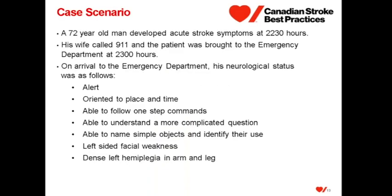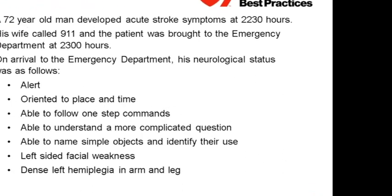We have a 72-year-old man who was brought to the emergency department with acute onset of stroke symptoms. His assessment found him to be alert, oriented to place and time, able to follow one-step commands, able to understand a more complicated question, able to name simple objects and identify their use, left-sided facial weakness, and dense left-sided hemiplegia in his arm and leg. Consider this case scenario as we walk through how to complete the Canadian Neurological Scale.